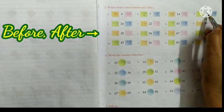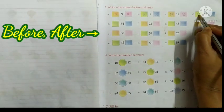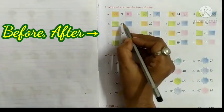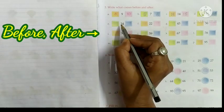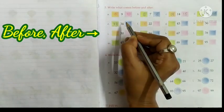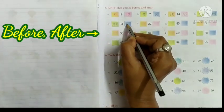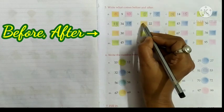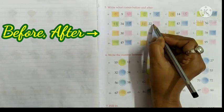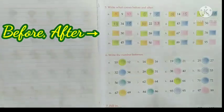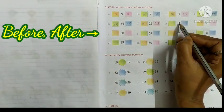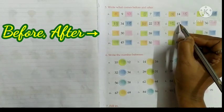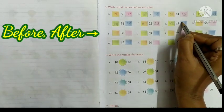Next, 19: before 19 is 18, after 19 is 20. Next, 34: before 34 is 33, after 34 is 35. Next, 22: before 22 is 21, after 22 is 23. Next, 43: what comes before 43? 42. What comes after 43? 44. Next, 56: what comes before 56? 55. What comes after 56? 57.